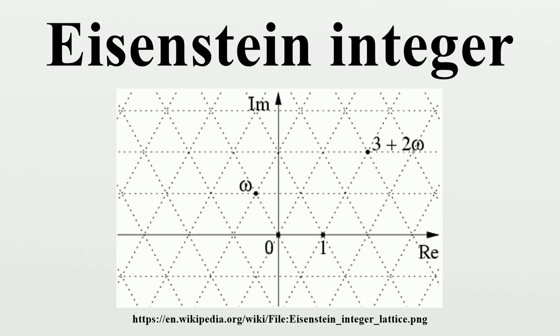they are plus or minus 1, plus or minus omega, plus or minus omega squared. These are just the Eisenstein integers of norm 1.